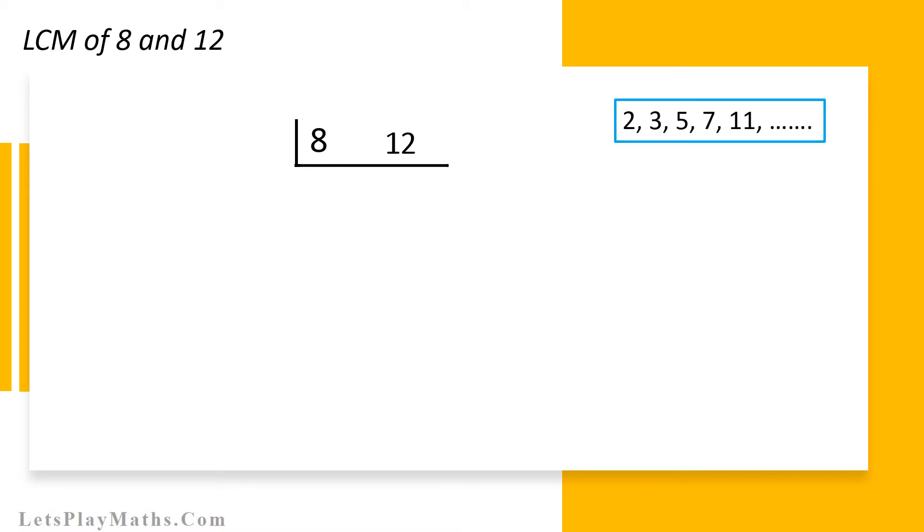Here, we can see the list of prime numbers are given. The prime numbers are 2, 3, 5, 7, 11, etc. Here, both 8 and 12 can be divided by 2. So, we can consider 2 as the lowest prime number.